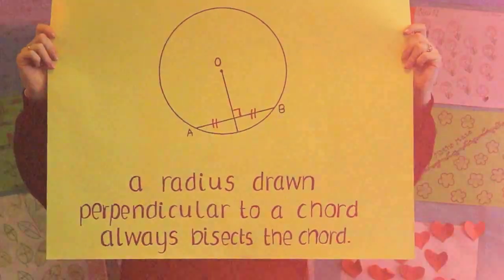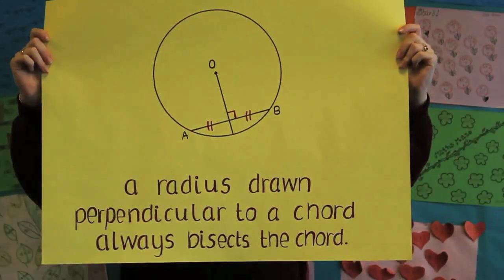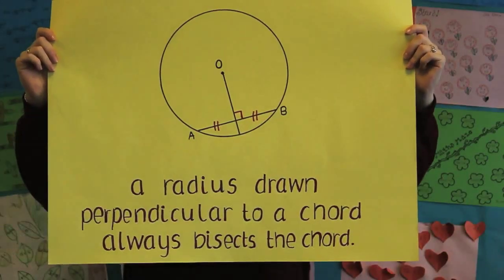A radius drawn perpendicular to a chord bisects the chord. These are most of the theorems, but unfortunately there is still one more.